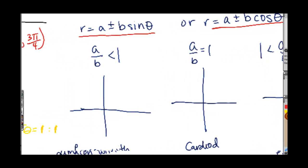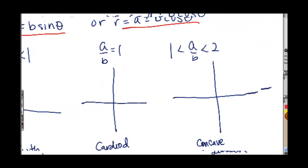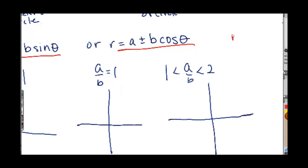And for these, what you're going to do, the a over b less than one is slightly different. But what you're going to do is you're going to actually do a table. You're going to pick the main axes as your theta values and you're going to get the corresponding r. So you do zero, pi over two, pi, three pi over two. And then you find out what the r's are, plot the points for a few of them. You'll do the tangents at the pole also.